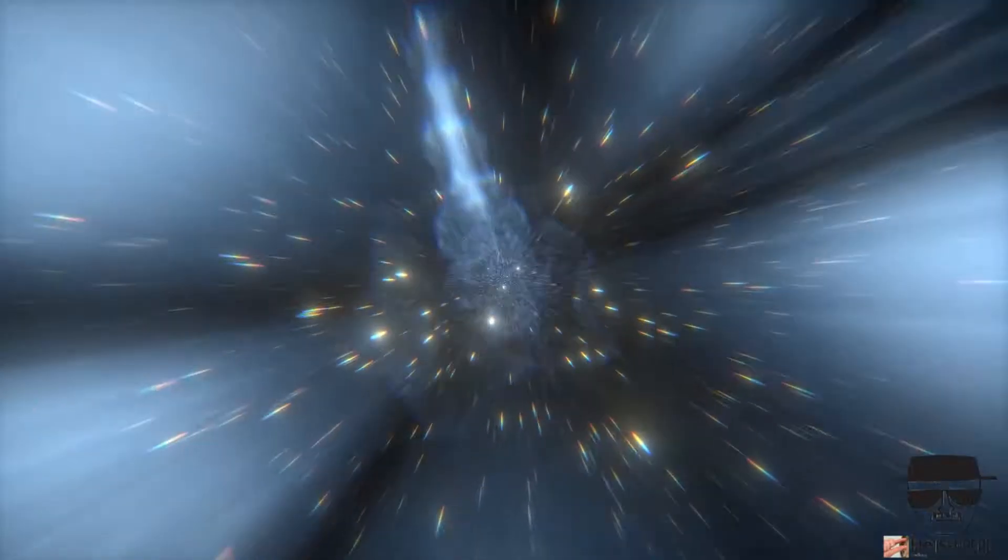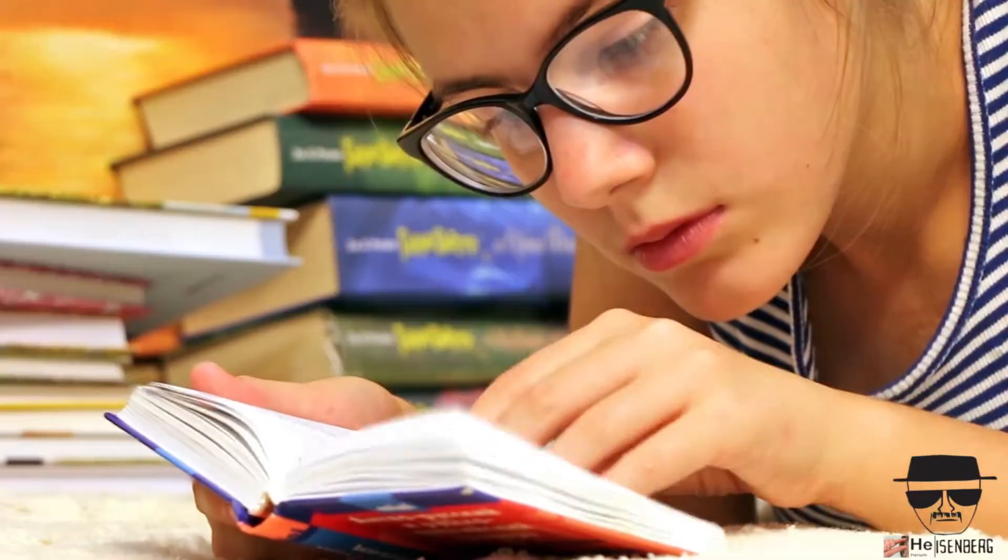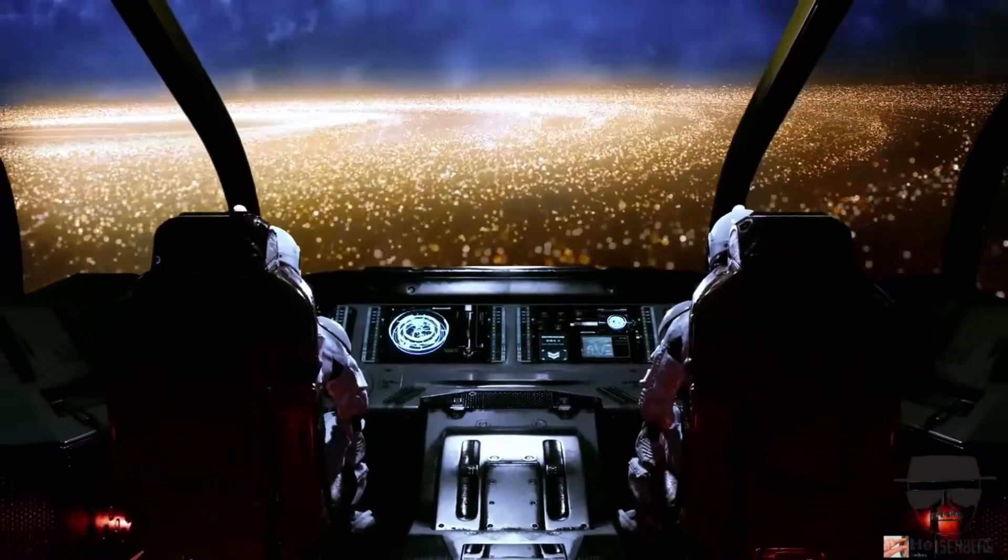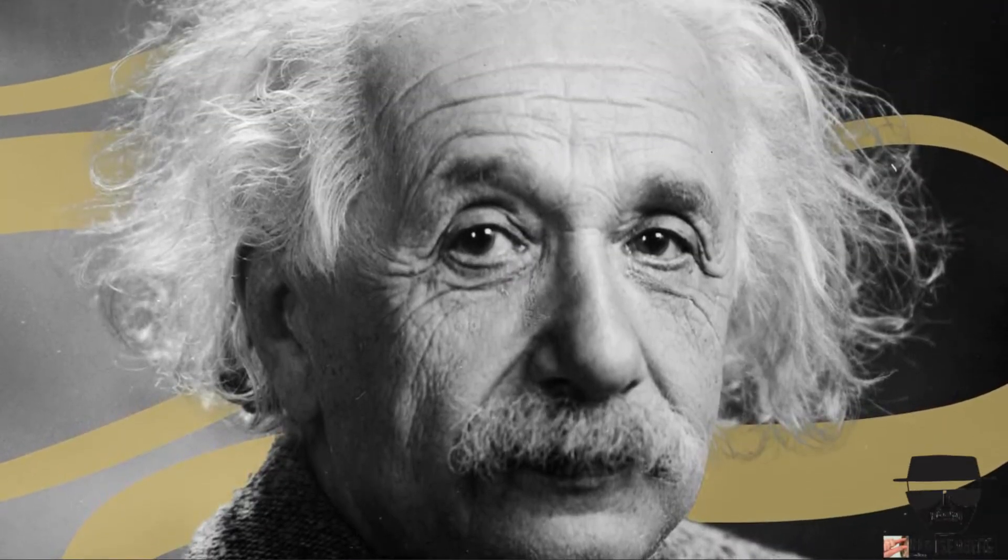To understand the real reason why you cannot go faster than light requires that we learn a key idea from Einstein's theory. While our common experience tells us that space and time are different things, he realized that they are more similar than different.